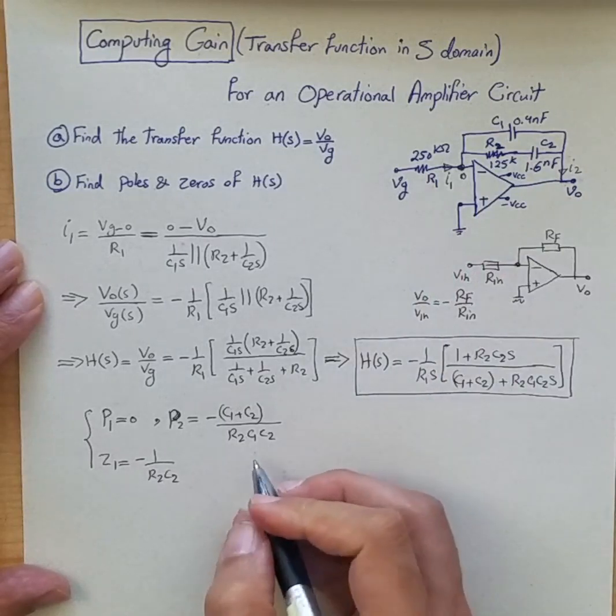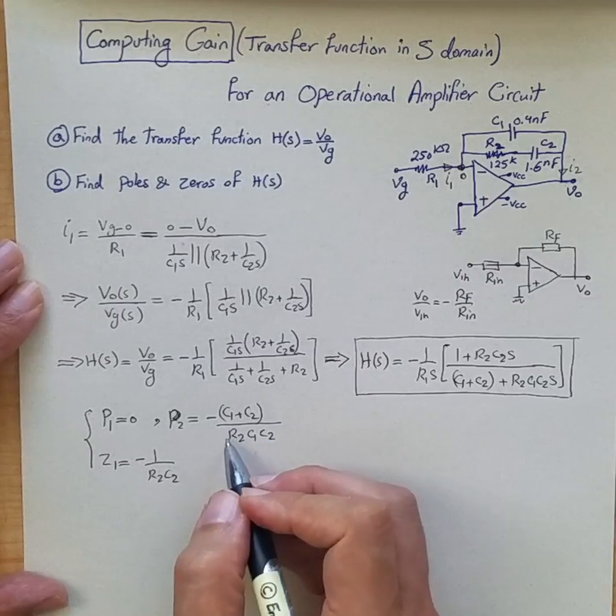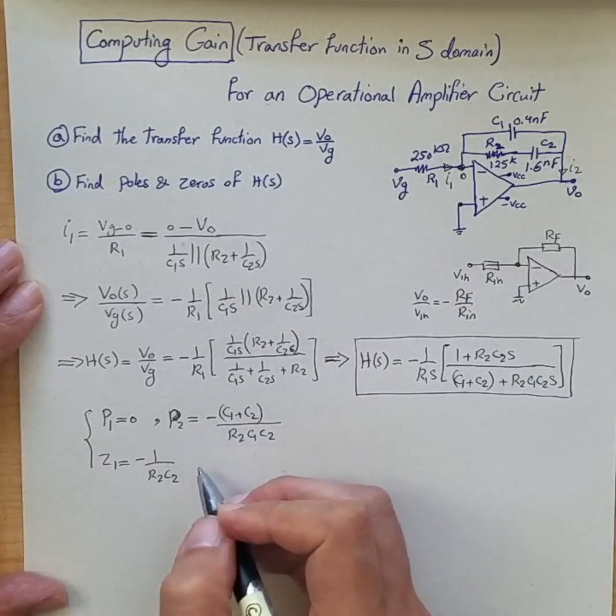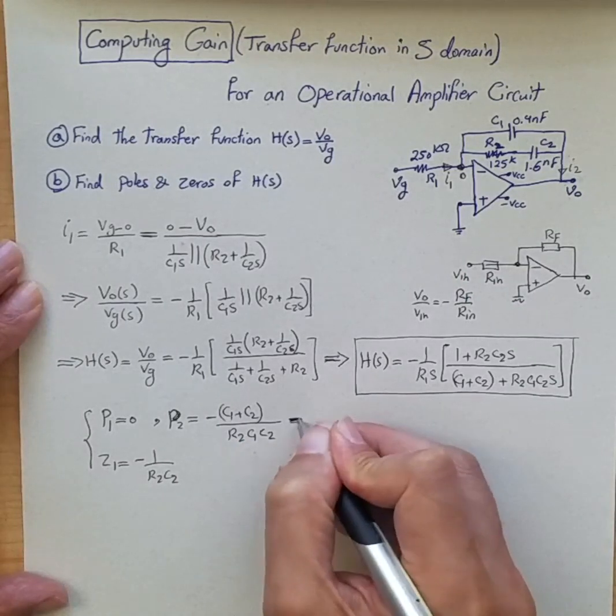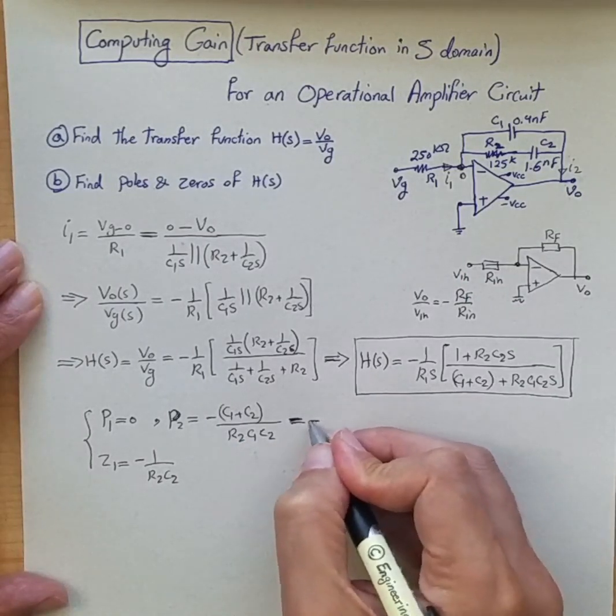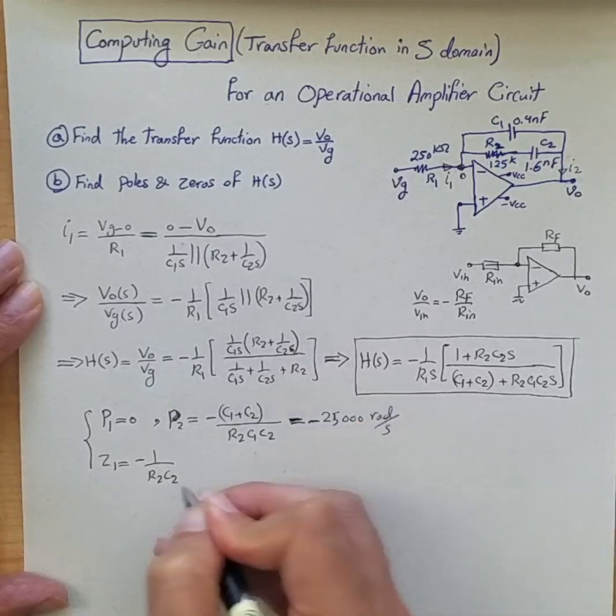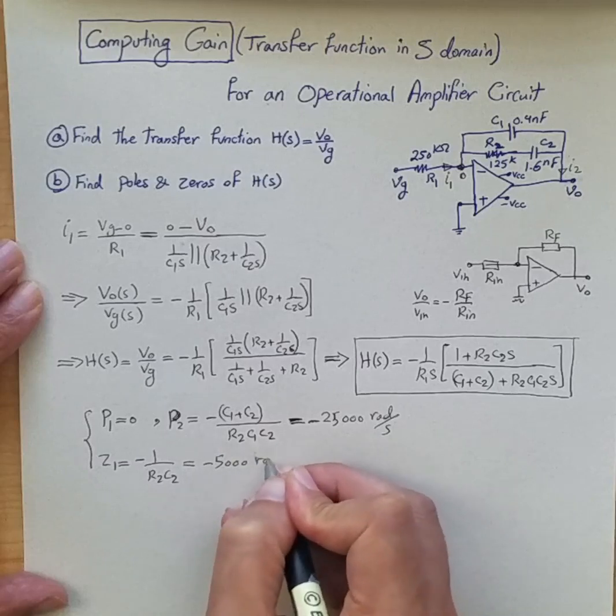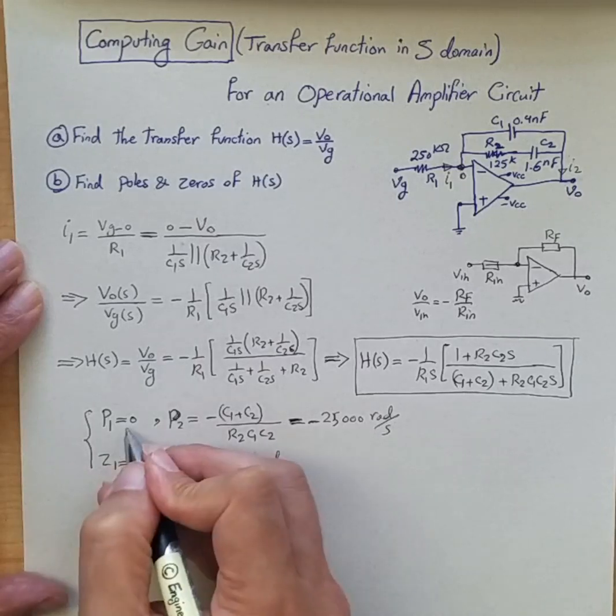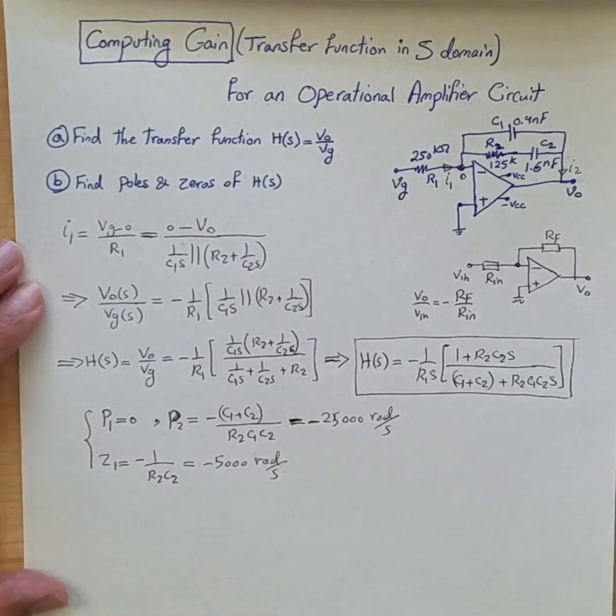Now if you dial in and plug in the values that are given here into these poles and zeros, what you get is P2 turns out to be negative 25,000 radian per second, and Z1 turns out to be negative 5,000 radian per second, and of course P1 is just at zero radian per second. Hope this helps.